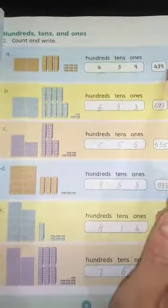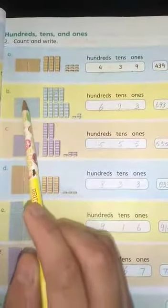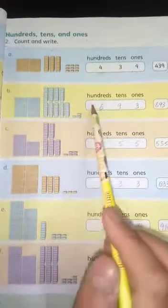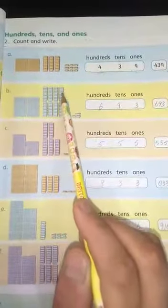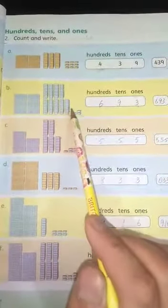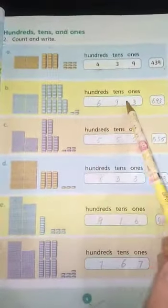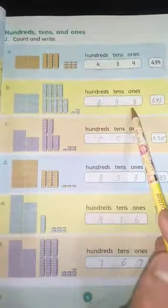B, five hundreds hai. Hundreds kitnay hai? 1, 2, 3, 4, 5, 6. Six hundreds hai. And tens kitnay hai? 1, 2, 3, 4, 5, 6, 7, 8, 9. Nine tens hai. And ones kitnay hai? 1, 2, 3. Three ones. The answer is 693. Haem ismein 6, 9, 3 write karenge.